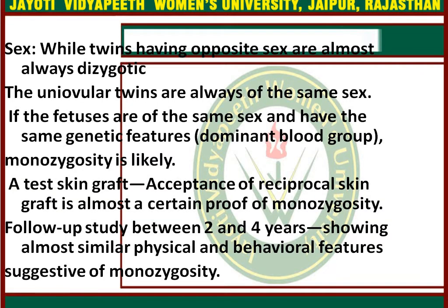Regarding sex: twins of opposite sex are almost always dizygotic — this is the rule. Uniovular twins are always of the same sex. If the fetuses are of the same sex and have the same genetic features such as dominant blood group, monozygotic twins is likely.